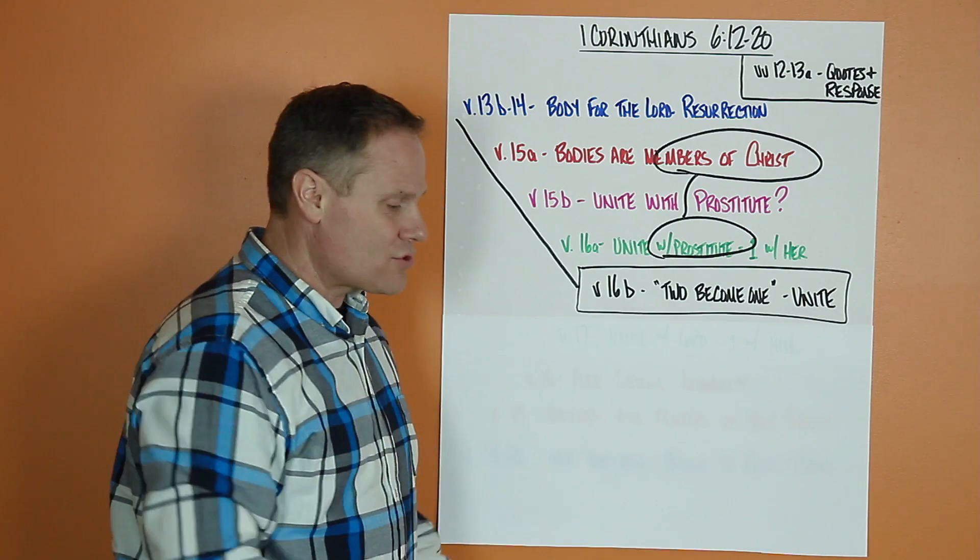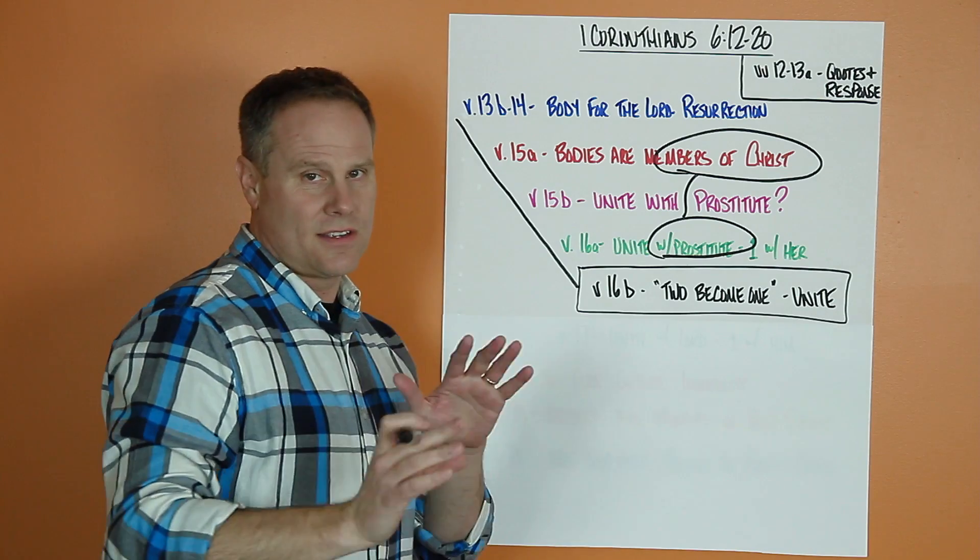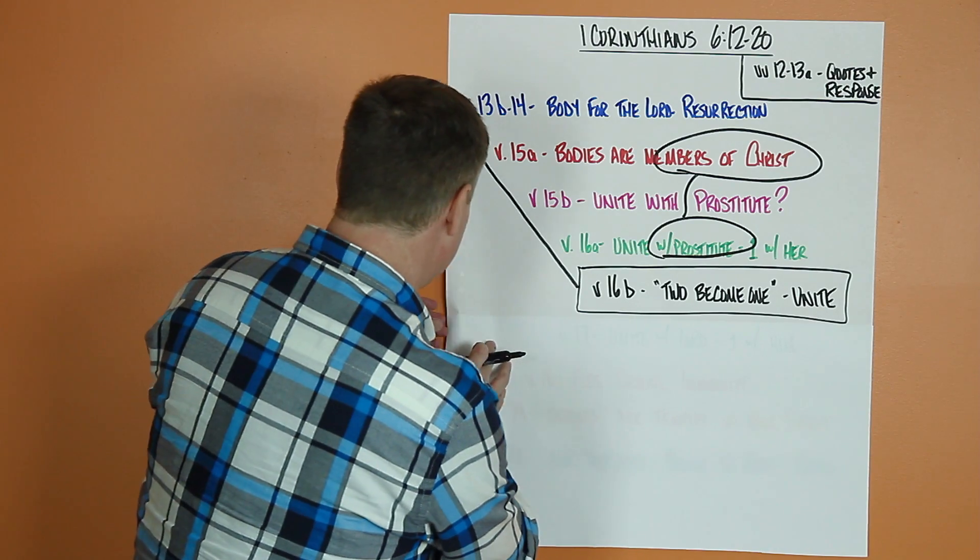Now it's a chiastic structure. So we should expect that we're going to see the same ideas in reverse order. So let's take a look.